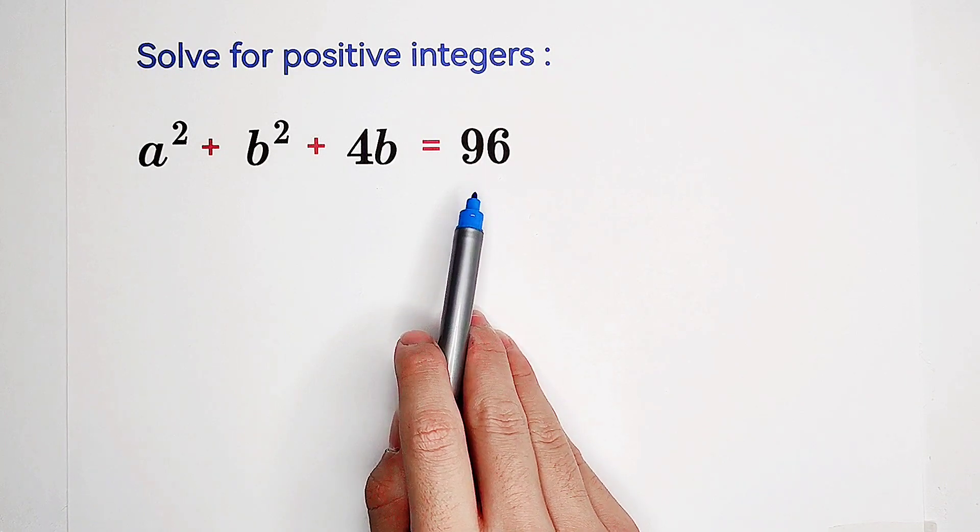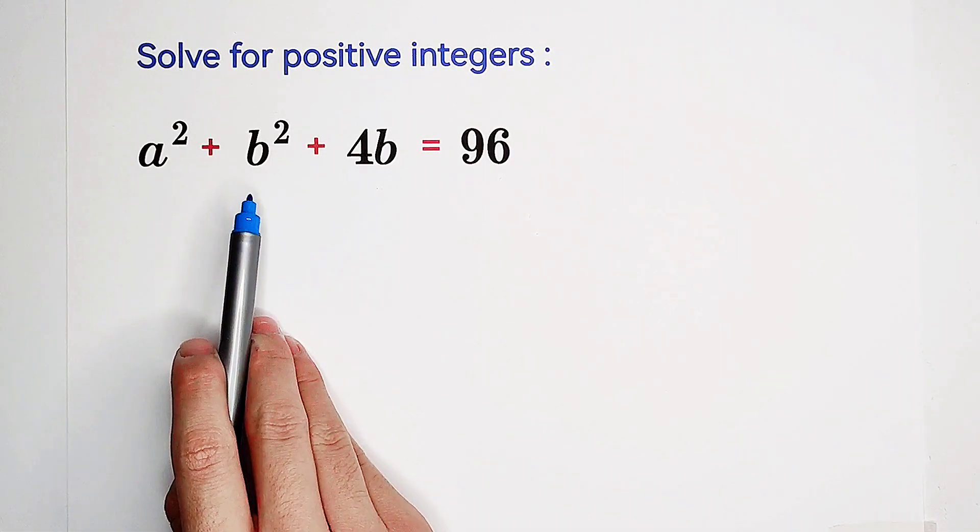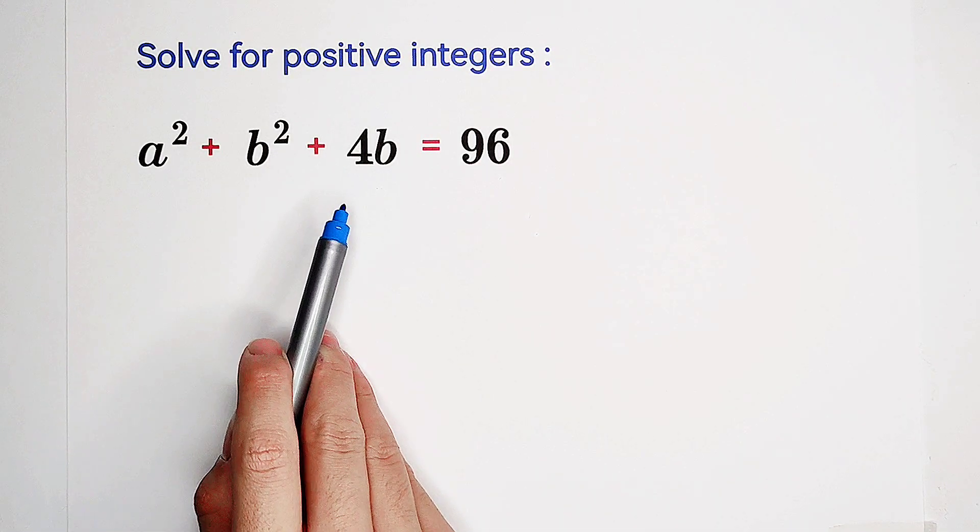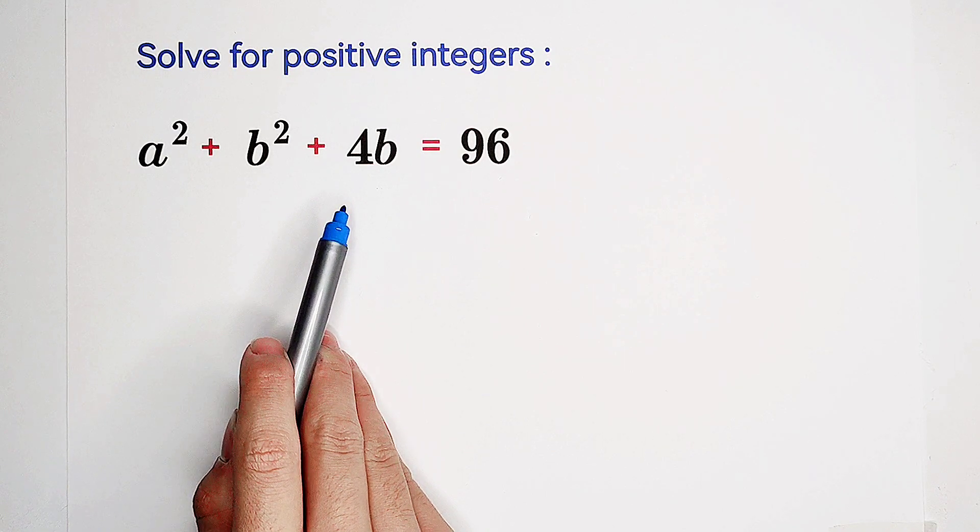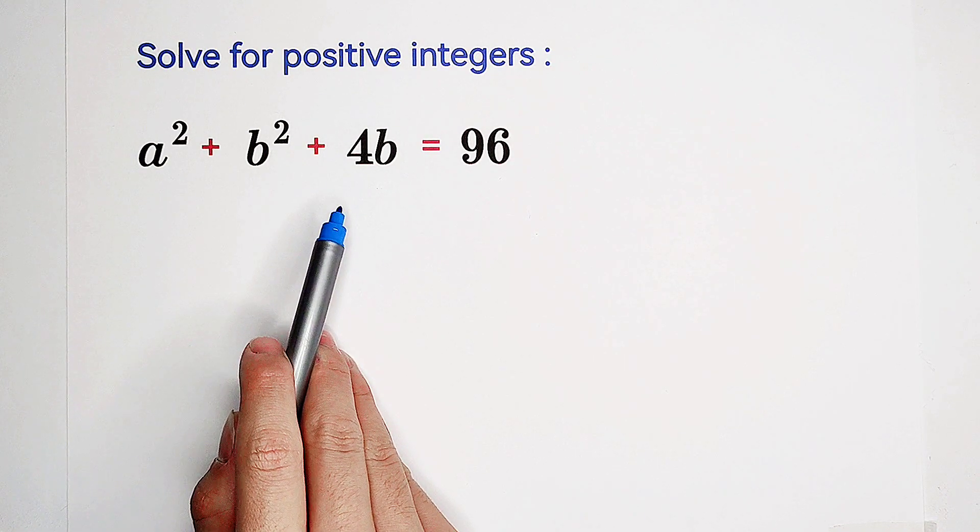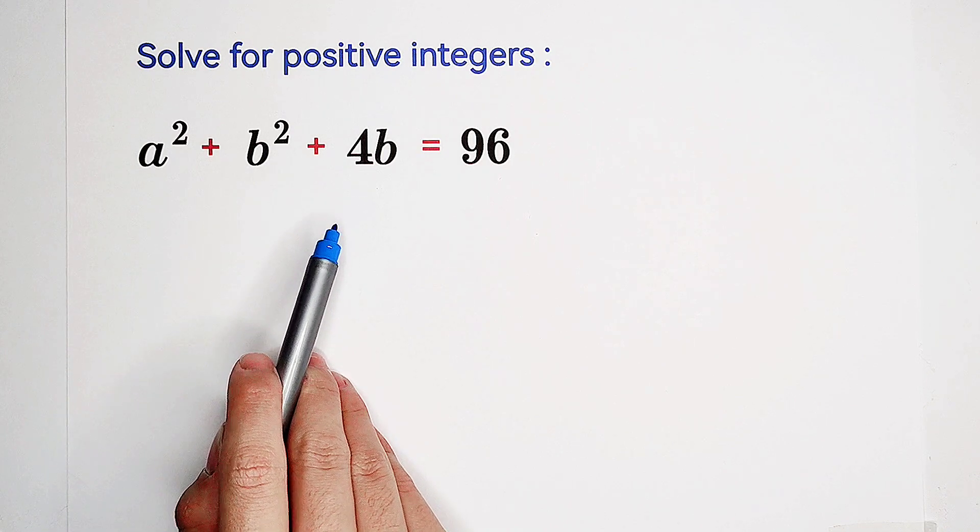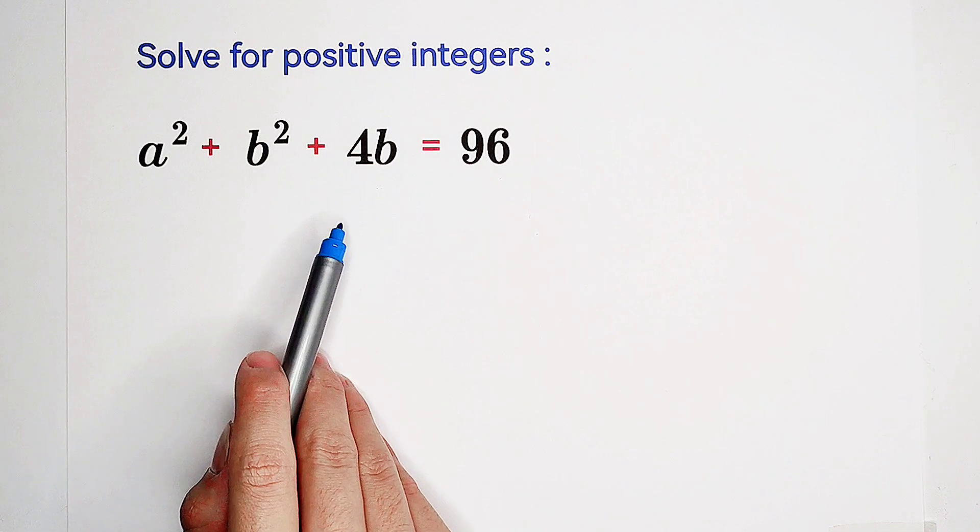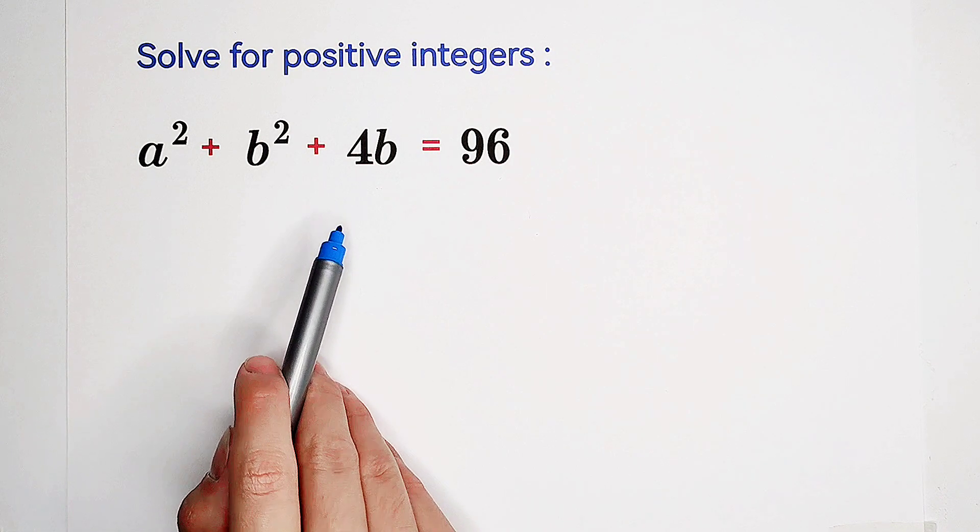a squared, b squared, and here appears a wild 4 times b. What's that? Of course, it is useful. Very useful.